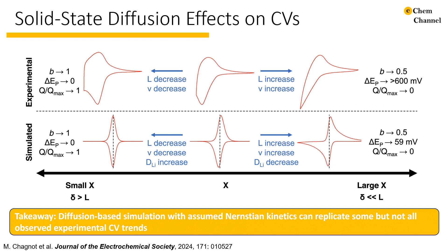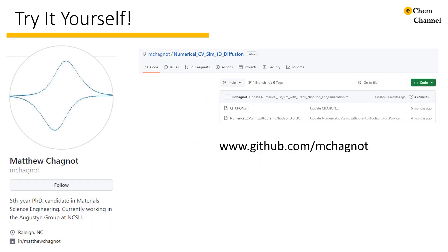This figure highlights our observations experimentally and in simulation of the effects of this dimensionless film thickness on the CV behavior of these films, showing the ways that this simulation both is and is not representative of the experimental data we were trying to simulate. It is my goal that our diffusion model can continue to evolve and develop a better picture of the diffusion-based limitations of cyclic voltammetry. If you're interested in this CV modeling, I strongly encourage you to check out my GitHub page and download a copy of the MATLAB code used in the paper.